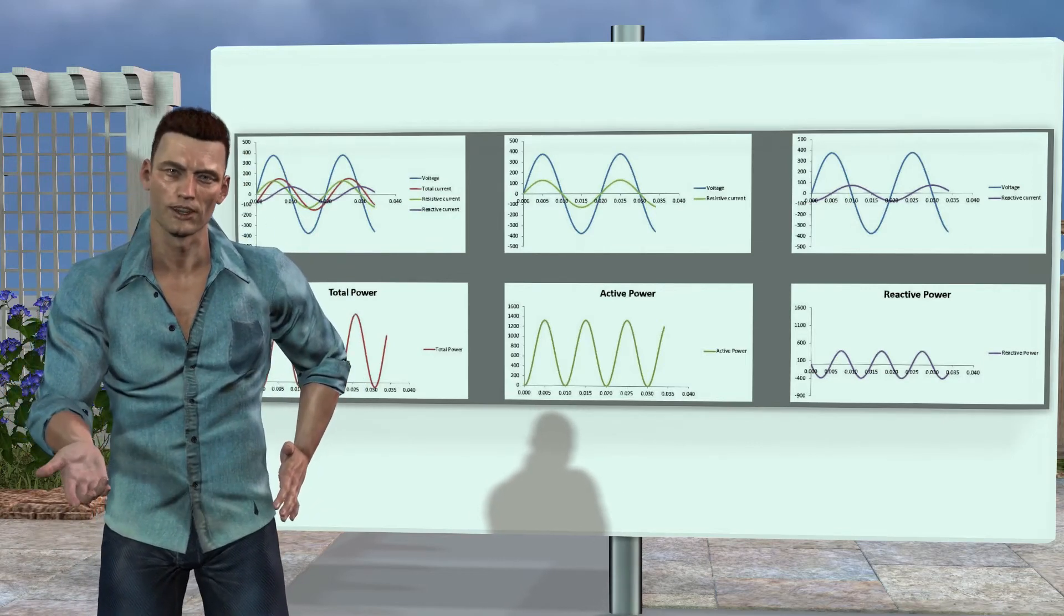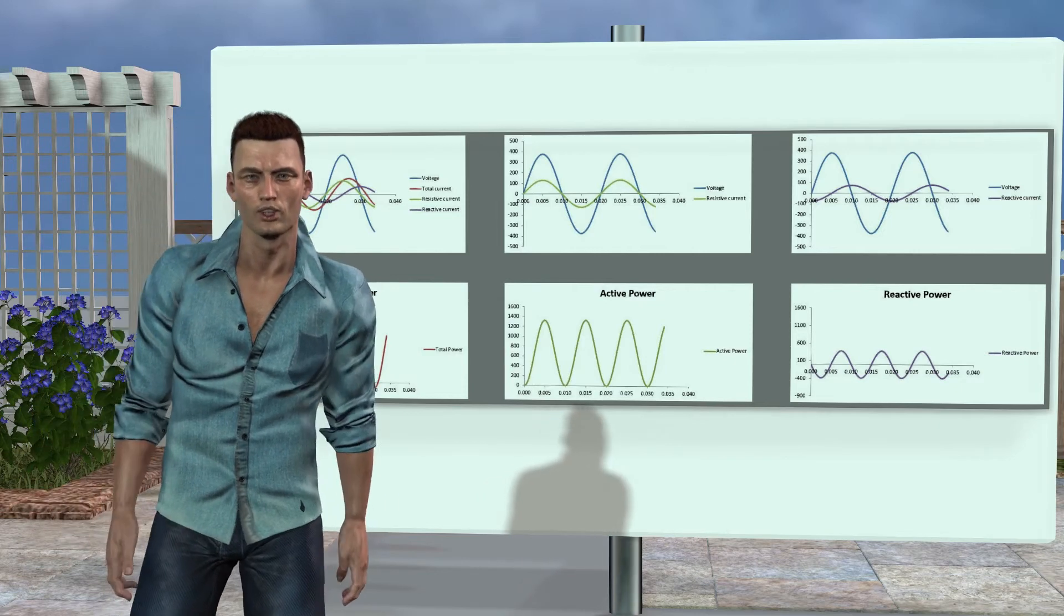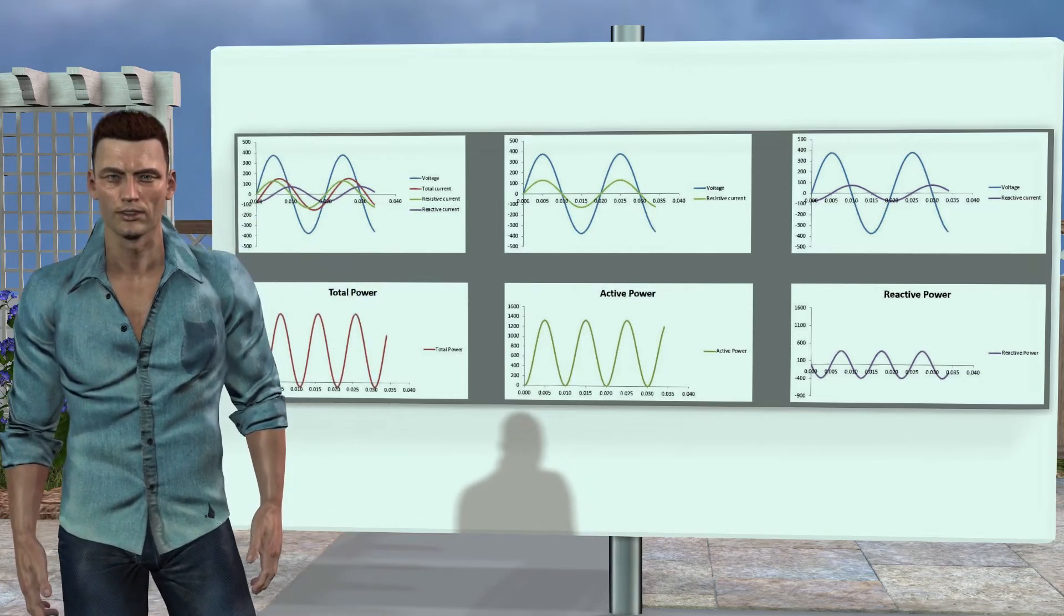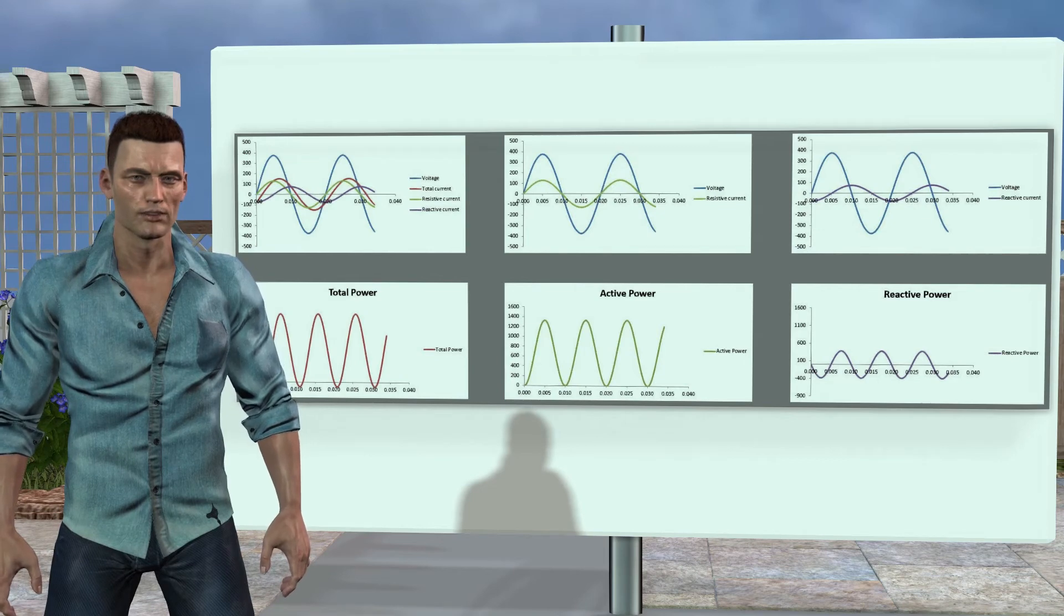The point to point summation of the active and reactive instantaneous power curves, gives rise to the apparent total power, called s, which is what we see in the graph on the left.